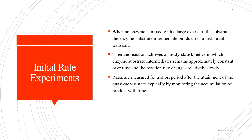Initial rate experiments. When an enzyme is mixed with a large excess of the substrate, the enzyme-substrate intermediate builds up in a fast initial transient and the reaction achieves steady state kinetics, in which the enzyme-substrate intermediate remains approximately constant over time and the reaction rate changes relatively slowly. Rates are measured for a short period after the attainment of a quasi-steady state, typically by monitoring the accumulation of product with time.